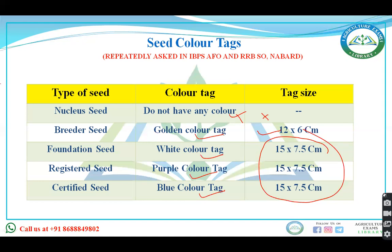Breeder seed is the progeny of nucleus seed or produced by the breeder themselves, with 100% genetic and physical purity, and a golden yellow tag. Foundation seed, also known as mother seed, has a white tag. It is the progeny of breeder seed, and its production is the responsibility of National Seed Corporation. Its genetic purity is 99.5% and physical purity is greater than 98%. Registered seed has a purple tag and is produced from foundation seed or registered seed itself; it is generally omitted in India.